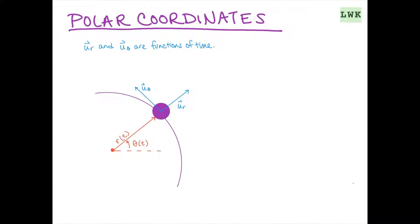So let's look at what our position is going to look like. Our position vector can be defined as r, and we can write that as r(t) times u-sub-r.